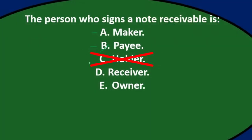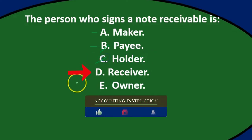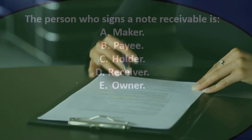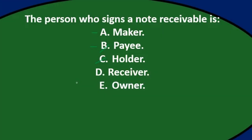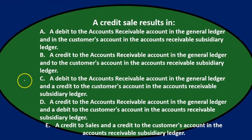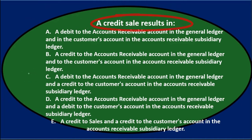Option C, the holder of the note, is the one who will get paid at the end and hold the note for collection — they don't need to sign it. Option D, receiver, isn't really a technical term here. Option E, owner, doesn't really apply either. So the person who signs a note receivable is the maker.